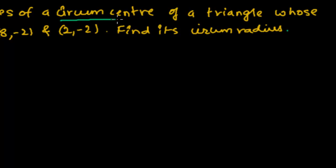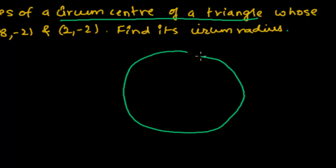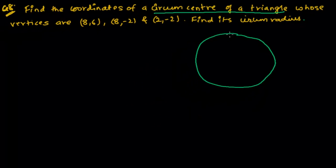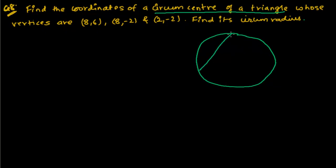First we should know what is called the circumcenter of a triangle. Let me draw a diagram. Suppose this is a circle — now there is a triangle inscribed in it. This triangle is inscribed by a circle. The center of the circle is called the circumcenter of the triangle.